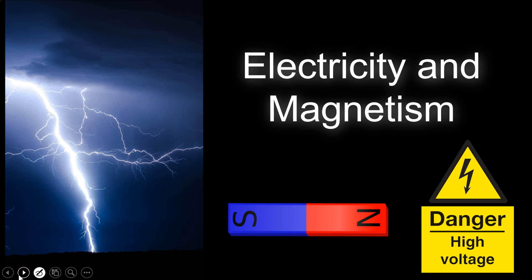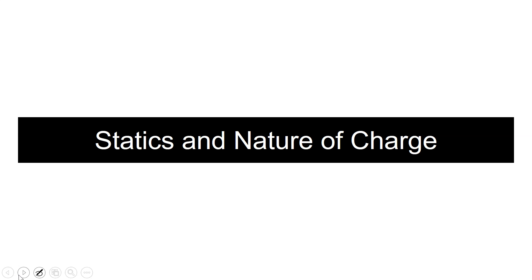We're going to start our next unit, which is electricity and magnetism. This unit we're going to talk about electricity and what it is, and then a little bit about magnetism. We'll talk about circuits as well. This first week, though, we're going to mostly focus on charge and the nature of charge.